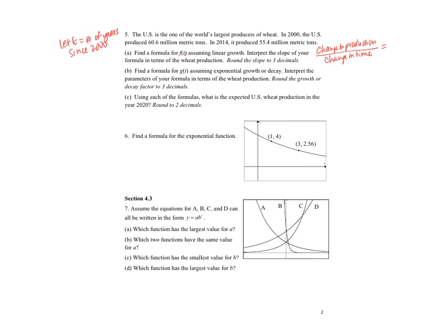Maybe we want to let T be the number of years since 2000. The change in production is in 2014 it's 55.4, and in 2000 it's 60.6. Then we have 14 years past 2000 and 0 years past 2000.